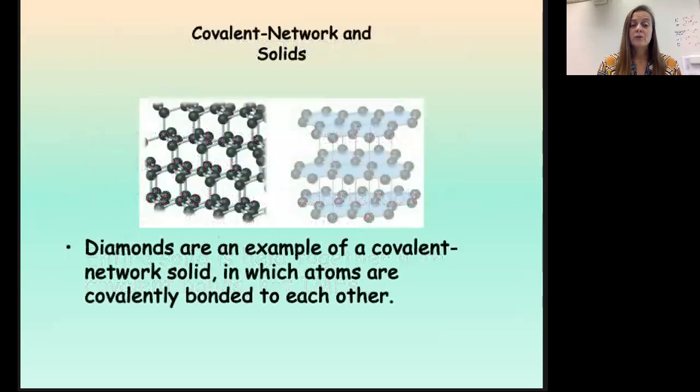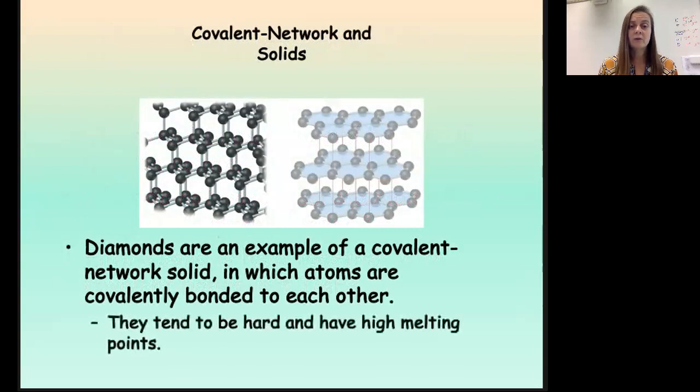Examples of these would be things like diamonds or coal. Diamonds are an example of a covalent network solid. We all know that they're extremely hard with a very high melting point. Diamond is one of the classic examples of a covalent network solid - a network of carbon atoms all covalently bonded together.